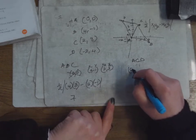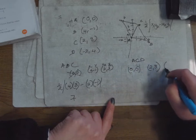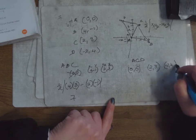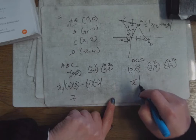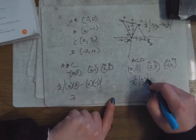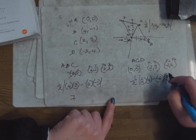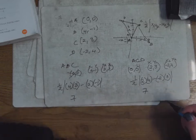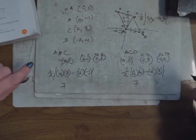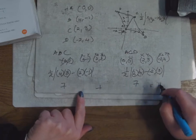Over here I'm using triangle ACD. A is (0,0), C is (2,3), D is (-2,4). x1 y1, x2 y2. So it's ½ |x1·y2 − x2·y1| = ½ |2×4 − (−2)×3| = ½ |8 + 6| = ½ × 14 = 7. So the two triangles are both 7 — add 7 and 7, you get 14. It is actually a parallelogram because both triangle areas are equal.